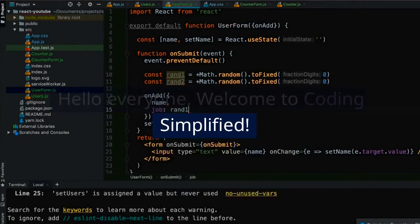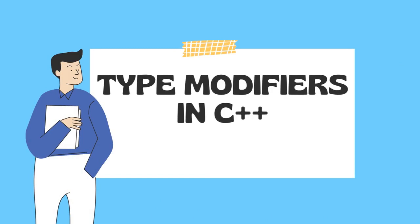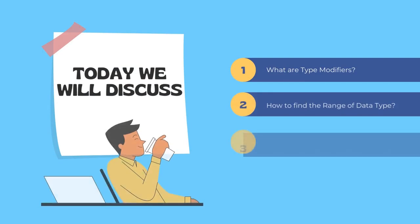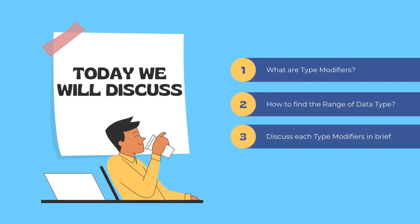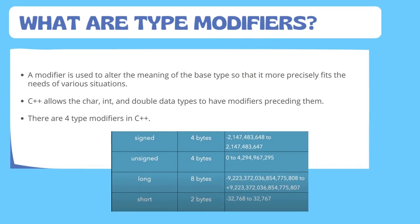Hello everyone and welcome to Coding Simplified. Today we will discuss type modifiers in C++. We will cover what type modifiers are, how to find the range of data types, and discuss each type modifier in brief. A modifier is used to alter the meaning of a base type so that it more precisely fits the needs of various situations. In C++ we are only allowed to modify three data types: char, int, and double. There are four types of modifiers: signed, unsigned, long, and short.